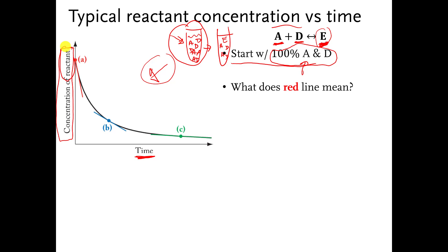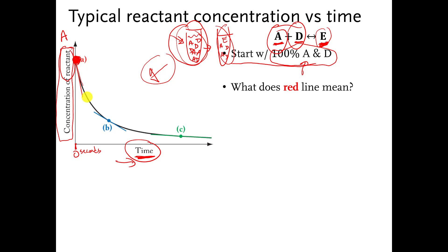We can pick either the concentration of A or concentration of D — let's say we're looking at the concentration of A. We can measure what the concentration of A is at different times. At the very beginning, zero seconds, the concentration of A is pretty high. And as time goes by, the A's and D's start to get converted into E's, so the A's and D's start to disappear — the concentration of A goes down as time goes by.